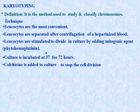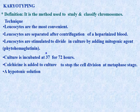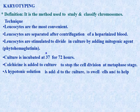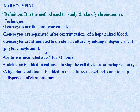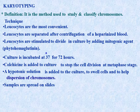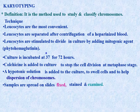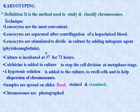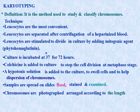After incubation, colchicine is added to the culture to stop cell division at the metaphase stage. A hypotonic solution is added to swell the cells and help dispersion of chromosomes. Samples are then spread on slides, fixed, stained, and examined. Chromosomes are photographed and arranged according to their length and the position of the centromeres.